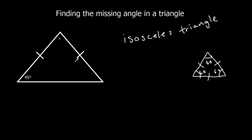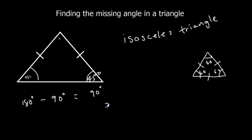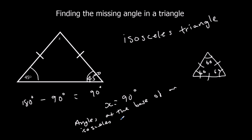Two lengths being the same means the two angles underneath them — the two angles at the base of an isosceles triangle — are equal. So if this one's 45 degrees, this one's 45 degrees as well. If I've got 45 and 45, that means I've got 90 degrees. And 180 in the whole triangle take away the 90 we've got is 90. So x is equal to 90 degrees. There are two reasons: angles at the base of an isosceles triangle are equal, and angles in a triangle add up to 180 degrees.